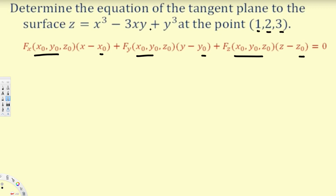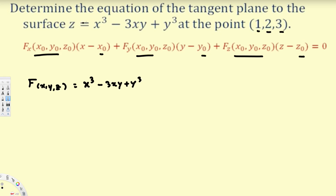The first step is to rearrange the equation and equate it to zero. So we write F(x, y, z) = x³ - 3xy + y³ - z = 0. This is our working equation.